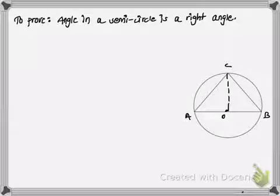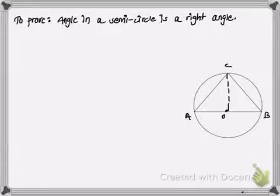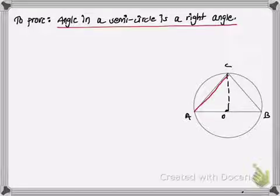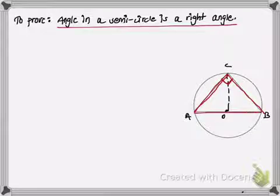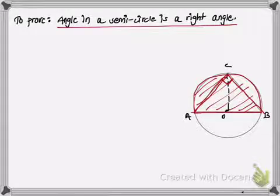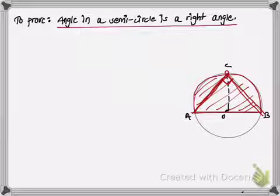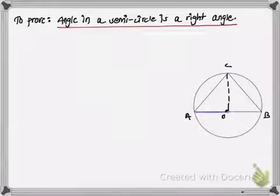Hello and welcome back to my tutorial on vectors. In this tutorial we'll be trying to prove that the angle in a semicircle is a right angle. We have to show that angle ACB should be equal to 90 degrees. This part is the semicircle, and the angle in a semicircle is represented by angle ACB, since one of its vertices touches the circumference of a circle. We have to show that angle ACB is 90 degrees.